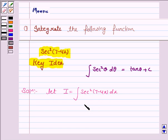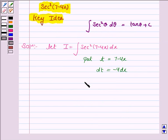So put t or theta equal to 7 minus 4x. So dt is equal to minus 4 dx. This implies dx is equal to dt by minus 4. Now dx is dt by minus 4 and t is 7 minus 4x.